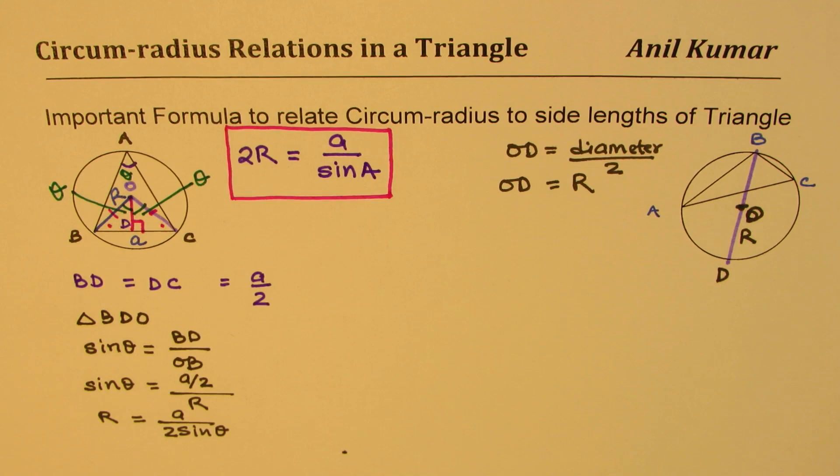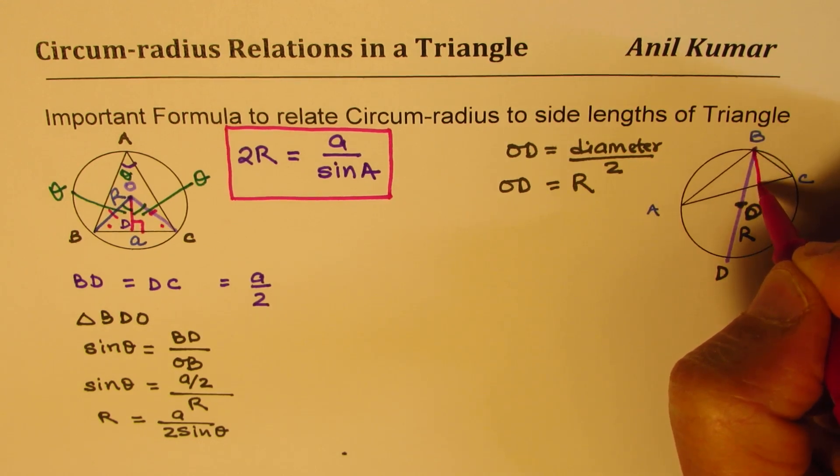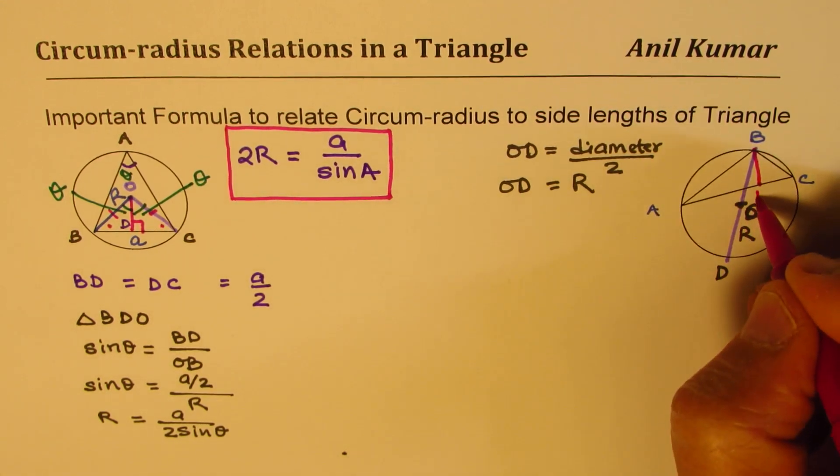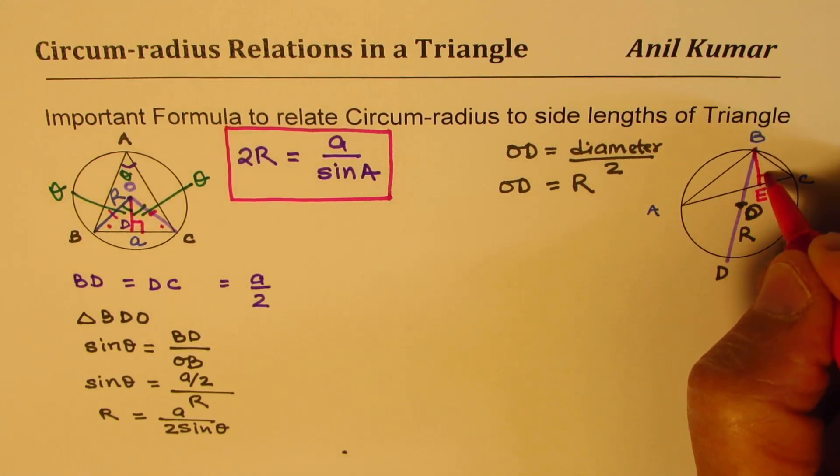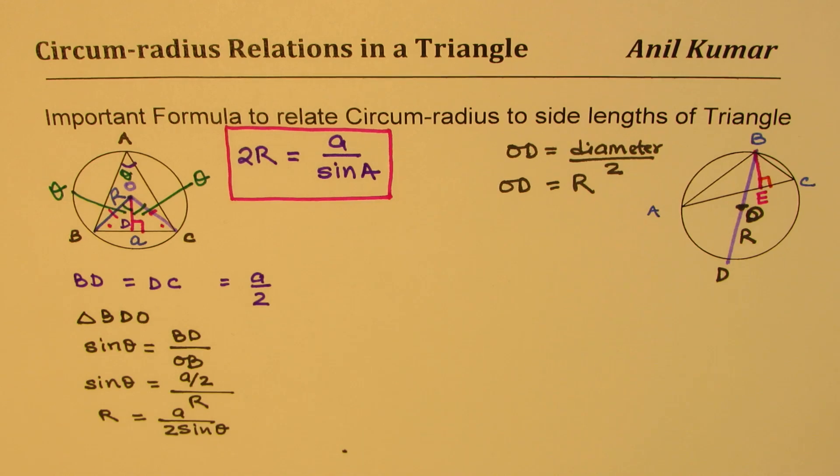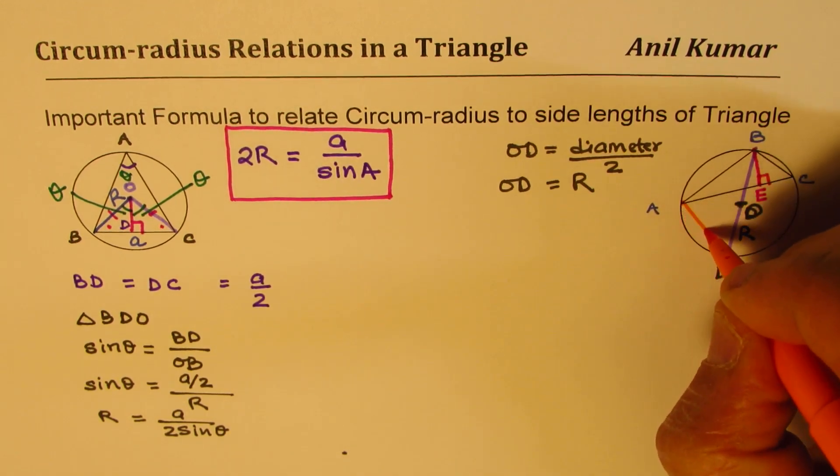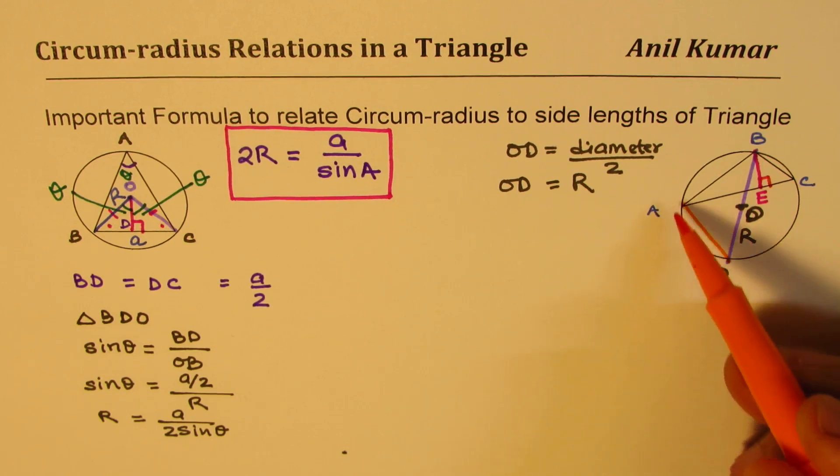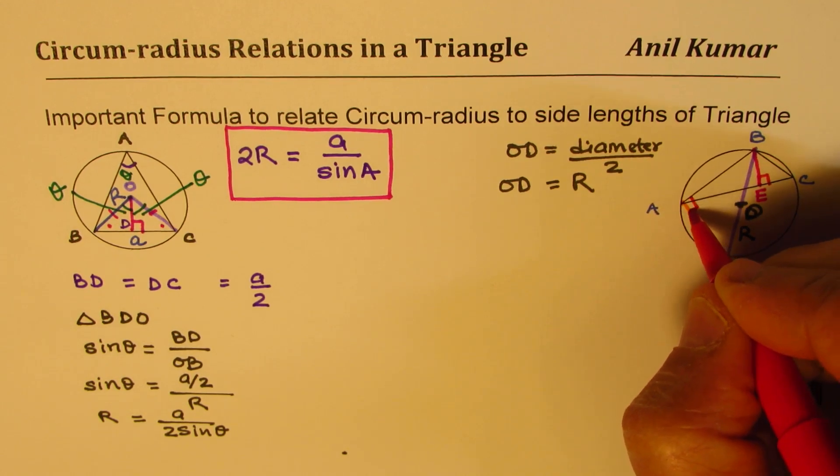In this particular triangle, let me drop a perpendicular from B to base AC. Let this be the perpendicular, this point be E, so that becomes a perpendicular. Now, if I join points A and D, in that case, that is a semicircle. In a semicircle, we'll have a right triangle.